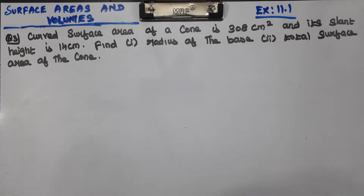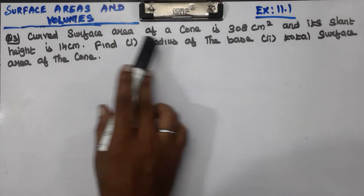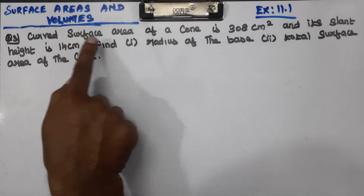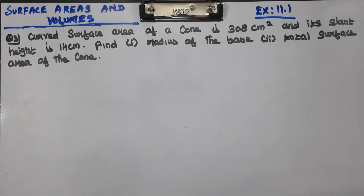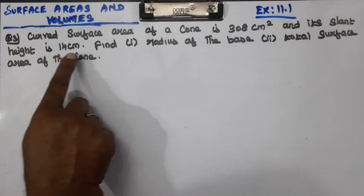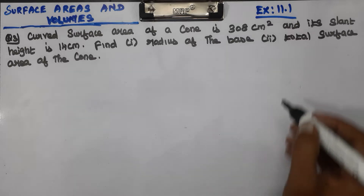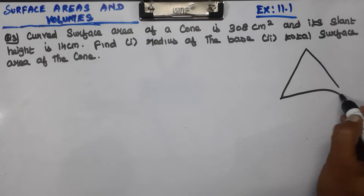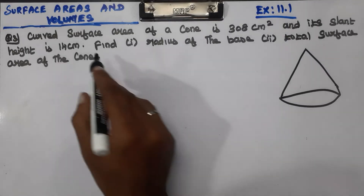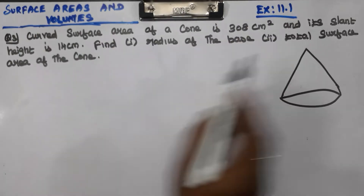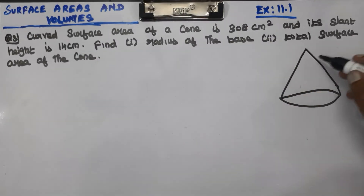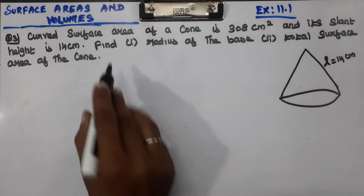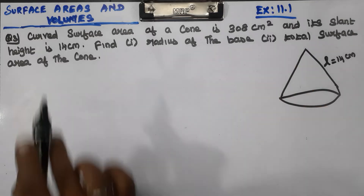Question number 3: The curved surface area of a cone is 308 cm². Its slant height is 14 cm. L equals 14 cm. Find its radius and total surface area.